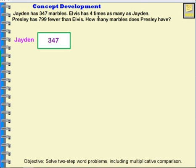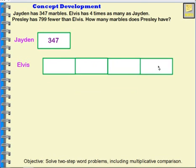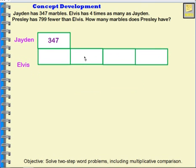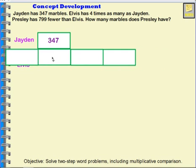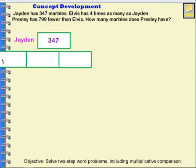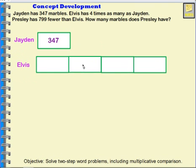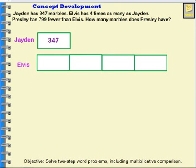Elvis has 4 times as many as Jaden, so I'll need 4 rectangles to represent Elvis. Each of these rectangles needs to be the same size as Jaden's. So Elvis is going to need four sets of 347.